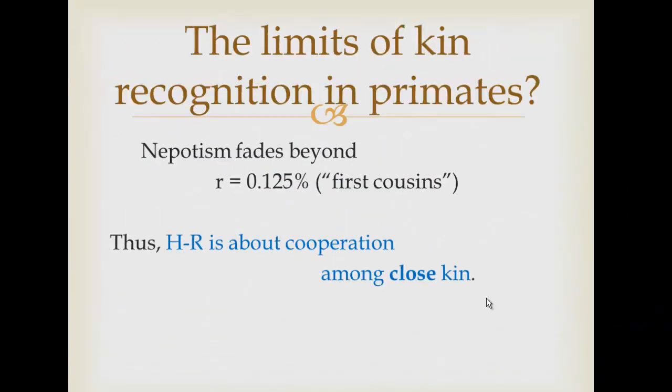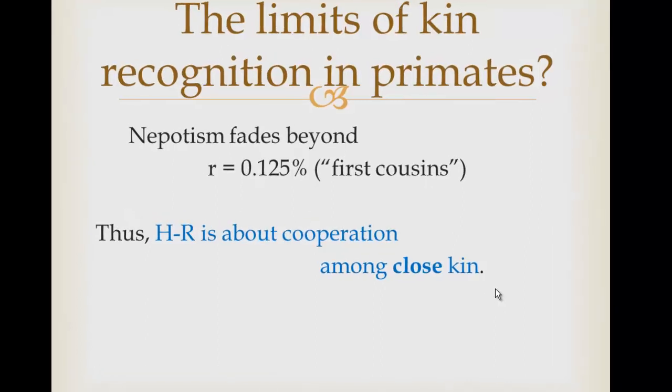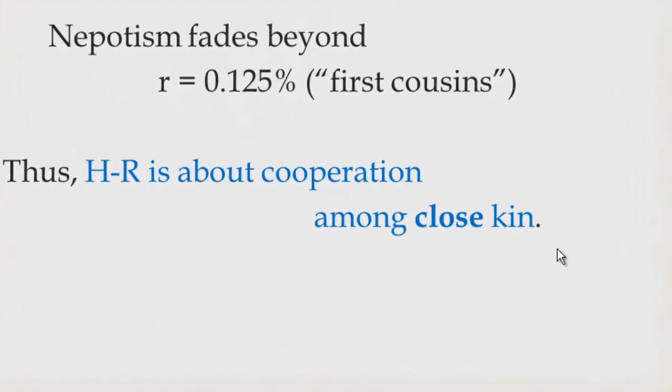When we look at primates, it appears that nepotism fades beyond the first cousin level. Primates aren't labeling others as first cousins, of course, but nepotism fades beyond that level of relatedness, and it reaches that level mostly in matrilines. Thus we can conclude that Hamilton's Rule is about cooperation among close genetic kin, which does explain why that's so significant in human societies and other animal societies.